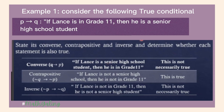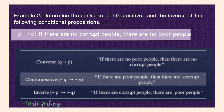Example 2: 'If there are no corrupt people, there are no poor people.' P is 'there are no corrupt people' and Q is 'there are no poor people.' The Converse is: 'If there are no poor people, then there are no corrupt people.' In the Contrapositive, since we have the word 'no' in our conditional proposition, we remove the 'no,' giving: 'If there are poor people, then there are corrupt people.' The Inverse is: 'If there are corrupt people, there are poor people.'